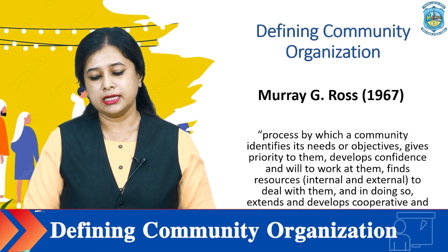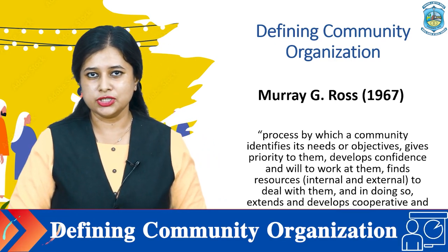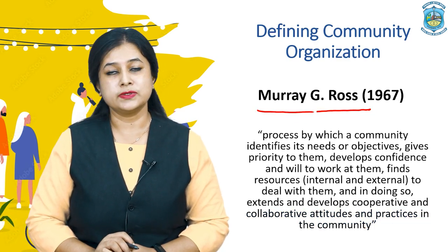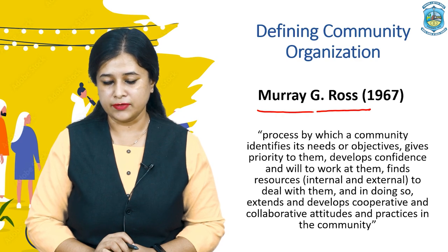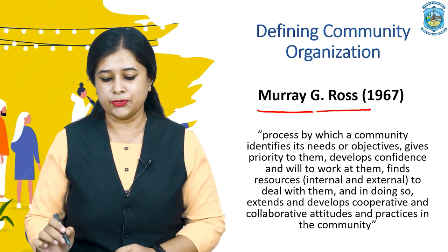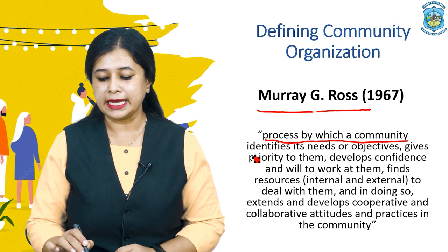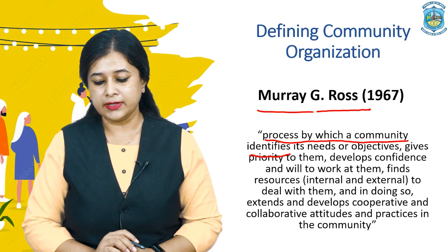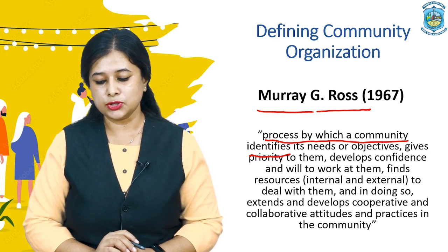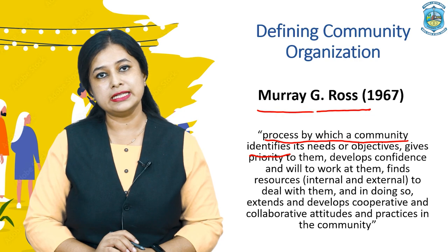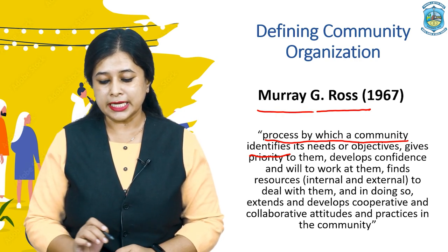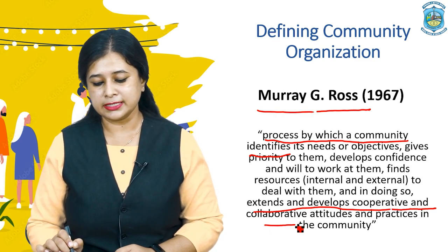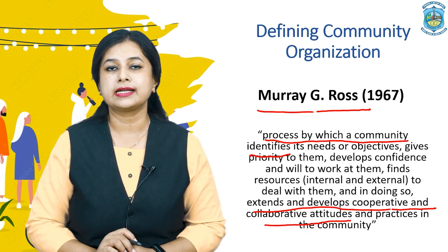We will now check the definitions of community organization. First, we will look into Murray G. Ross's definition, which was given in 1967. According to Murray G. Ross, community organization is the process by which the community identifies its needs and objectives, gives priority to them, develops confidence and will to work at them, finds resources both internal and external to deal with them, and in doing so extends the cooperation and collaborative attitude as well as practices in the community.